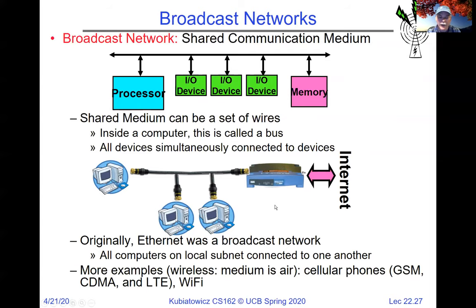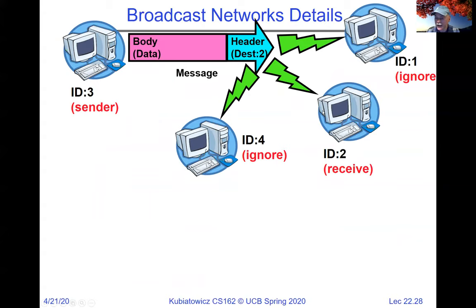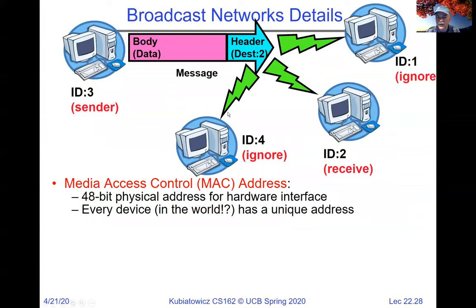Examples of broadcast networks include cellular phone, CDMA, LTE, Wi-Fi, etc. When sending from, say, node 3 to node 2 over broadcast media, every node has to look at the packet header to know whether they need to observe or can ignore it. That header address is called a media access control address — a MAC address. Most things you encounter now are 48-bit physical addresses, or MAC addresses, which are supposed to be unique for every device everywhere in the world.